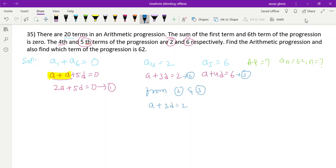From equations 2 and 3: a plus 3d equals 2, and a plus 4d equals 6. Subtracting these, we get d equals 4.